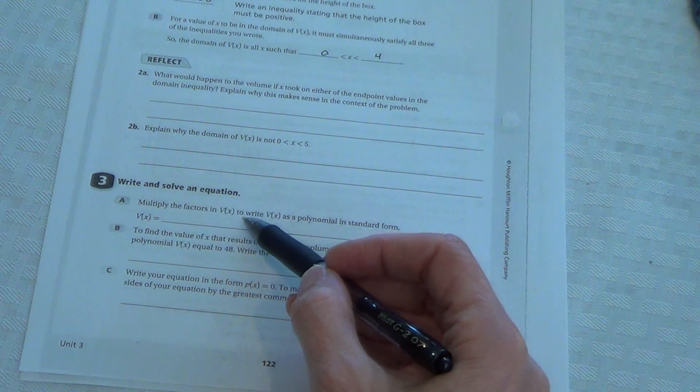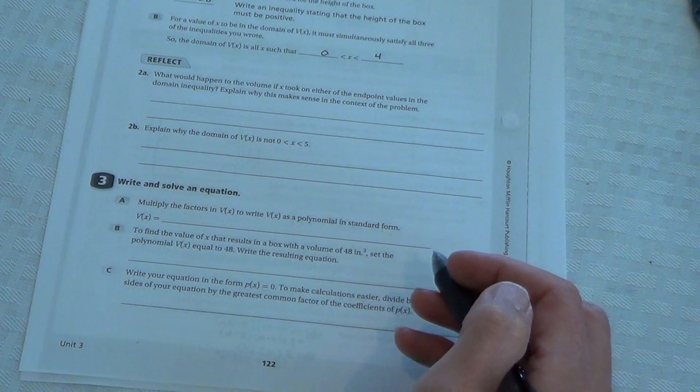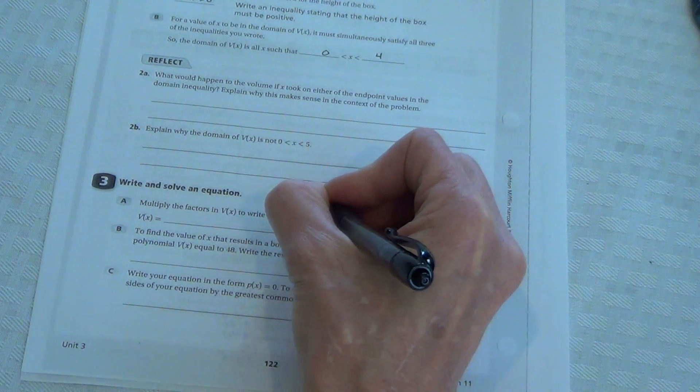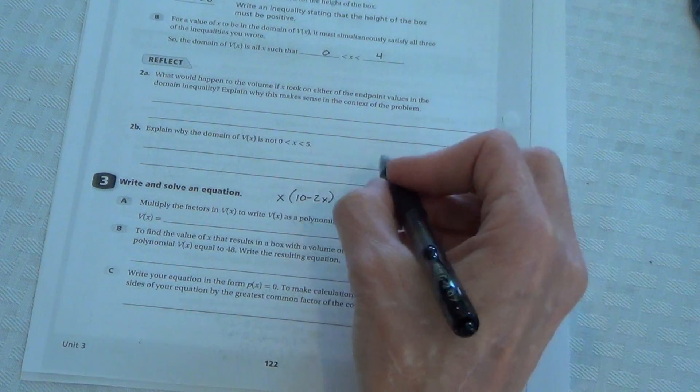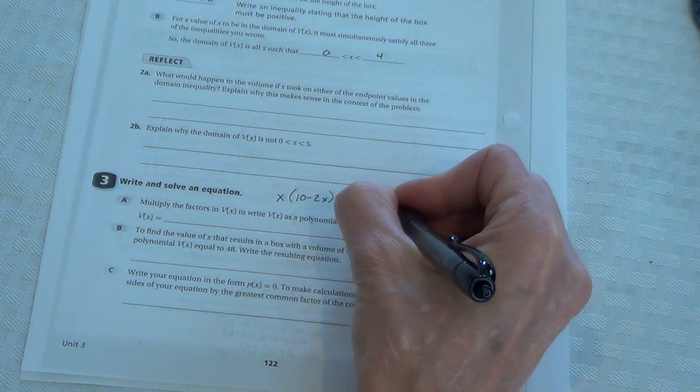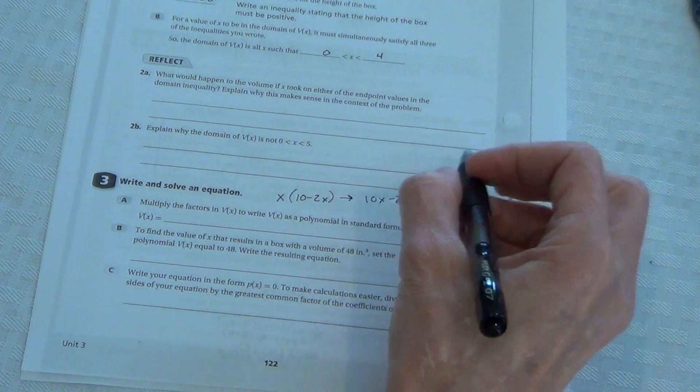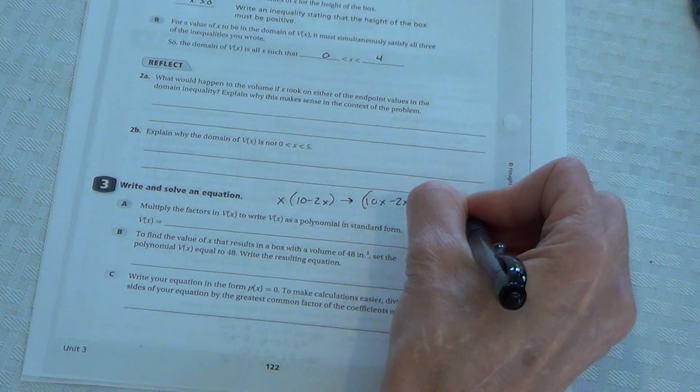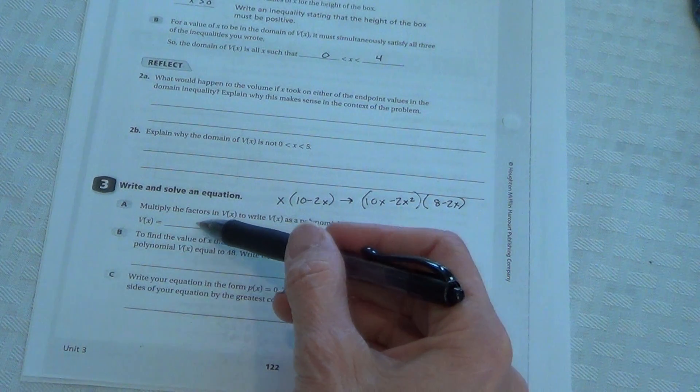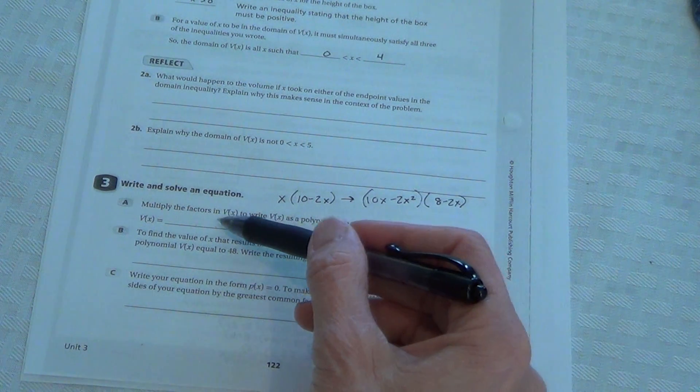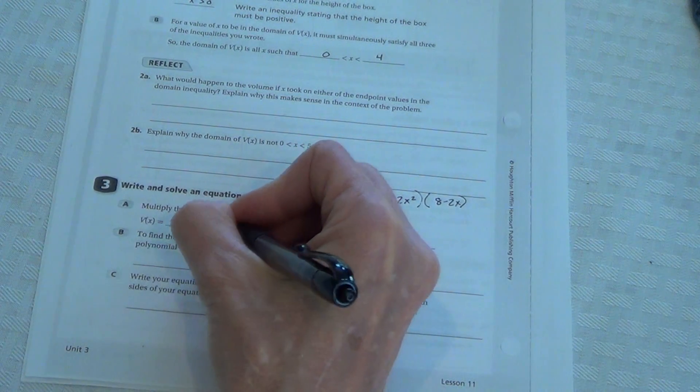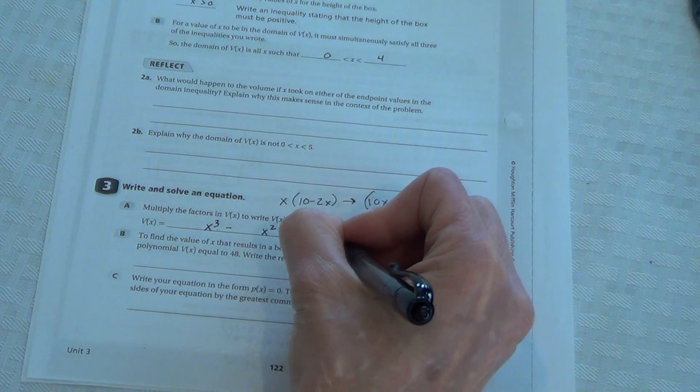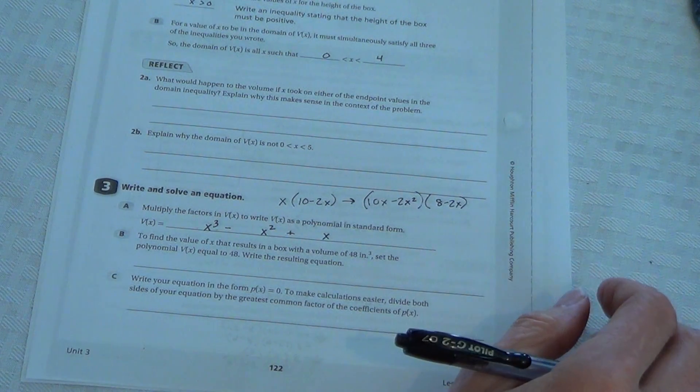Okay? Ask questions if you need to, but you need to get that in your own words on those problems. Multiply the factors. V of x define V of x as a polynomial in standard form. So all you need to do here is take what we had on the front side, x times 10 minus 2x. Distribute that. You would get 10x minus 2x squared. And now box or foil that with 8 minus 2x. And then once you've boxed or foiled that, then write your answer in here in standard form. Putting the cubic, the x cubed first, minus, and you'll have an x squared, and then plus your x.